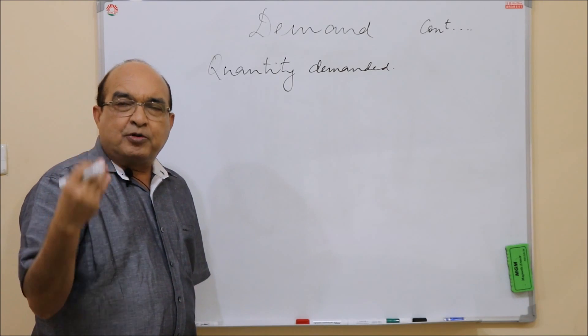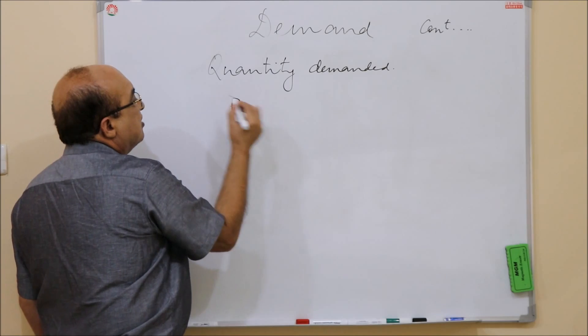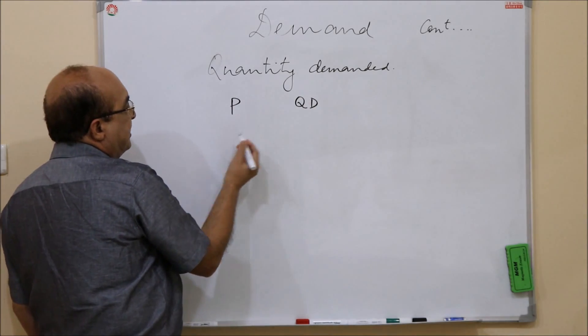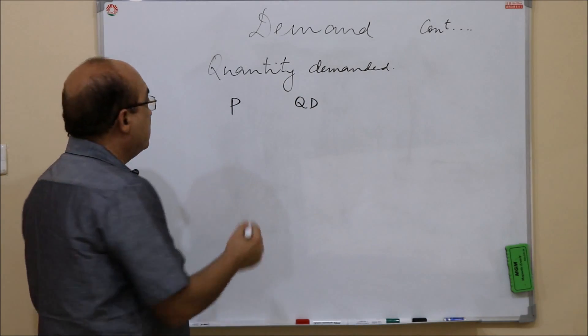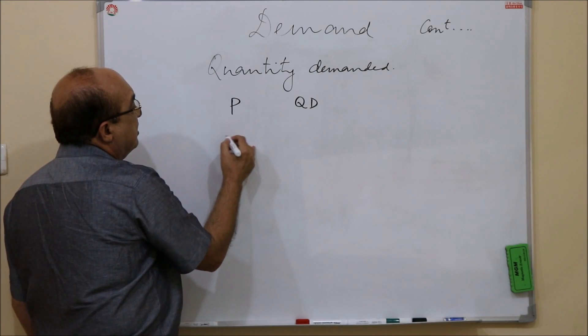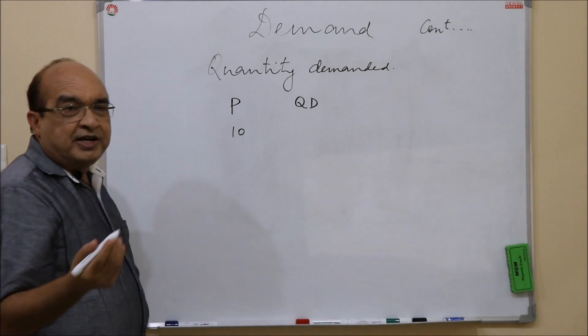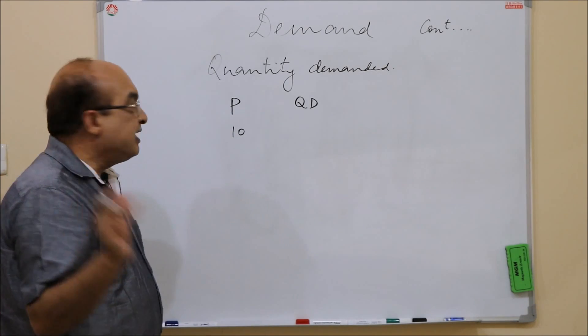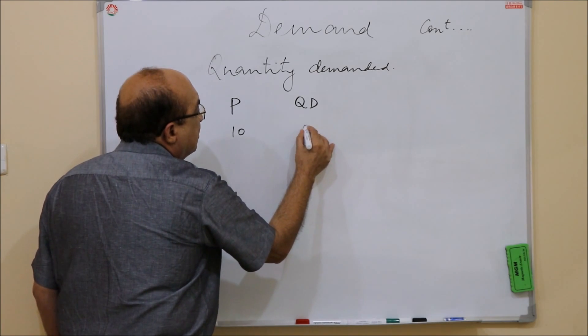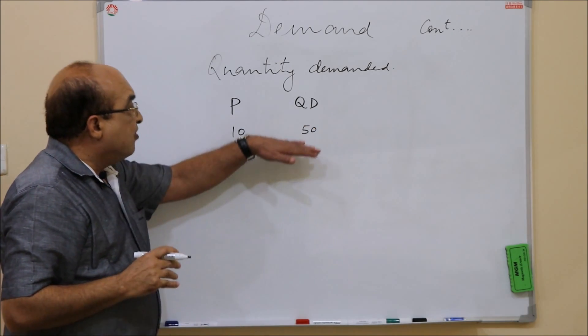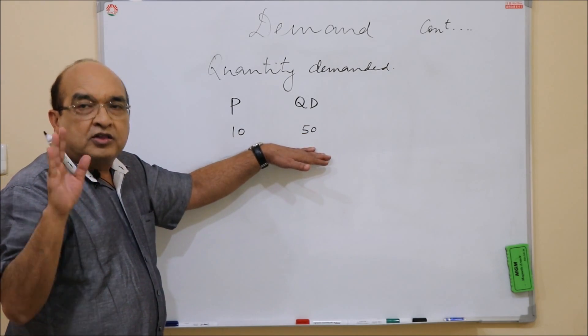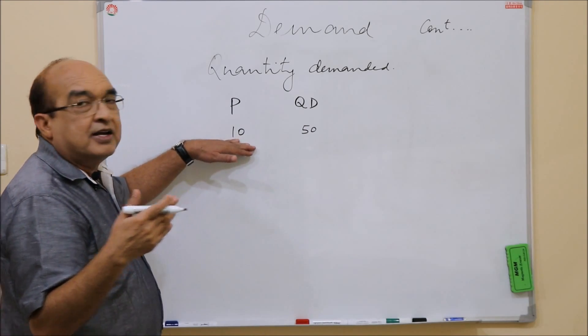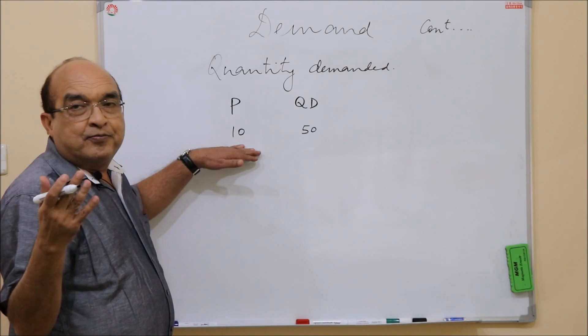Let me explain it with the help of a hypothetical schedule where we are making a hypothetical table of two columns - one is price, another one is quantity demanded. Suppose when the unit price is 20 monetary units (it could be dollars, it could be rupees, it could be any other currency), suppose quantity demanded was 50 units. That is, 50 units of the commodity or good is bought in the market or is likely to be bought in the market when the unit price is 10 per unit.